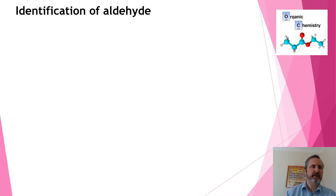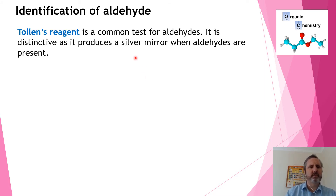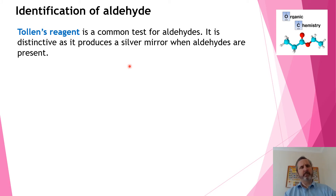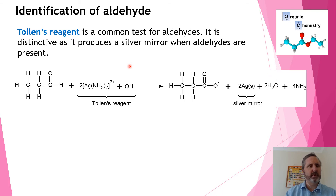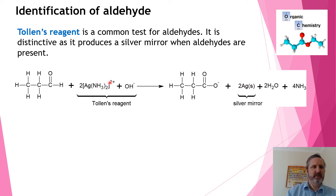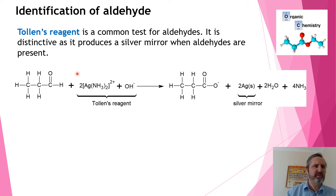We can distinguish between an aldehyde and a ketone using Tollens reagent. You have an aldehyde, add Tollens reagent, then heat it. If the aldehyde is present, the inside of the test tube gets silver metal coated on it and you get a lovely silver mirror produced. This happens because the silver ion gets reduced to silver metal. Only the aldehyde gets oxidized — it gets oxidized to a carboxylic acid. An alcohol wouldn't work, so it's a specific test for an aldehyde.